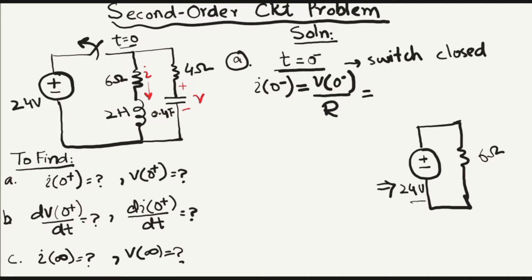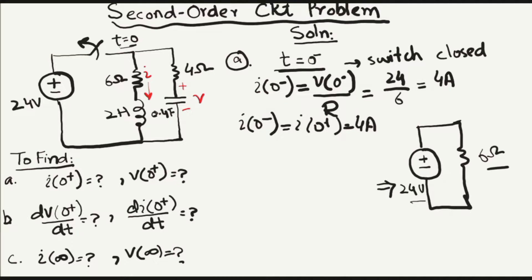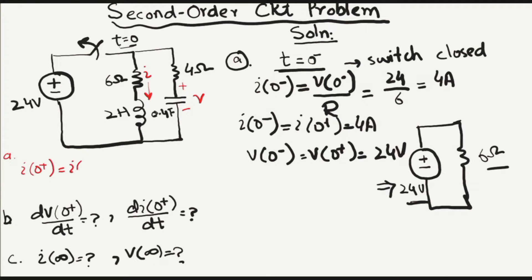We find the initial current using Ohm's law: I equals V over R. With V equal to 24 V and R equal to 6 Ω, the current is 4 amperes. Since current is continuous across the switching time, I at t equals 0 negative equals I at t equals 0 positive, which is 4 amperes. The voltage in the circuit is 24 volts. So for part A: I equals 4 A and V equals 24 V.